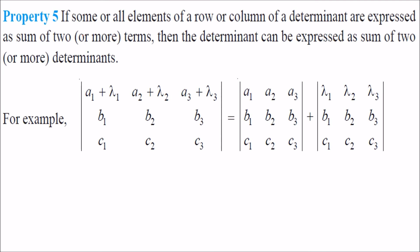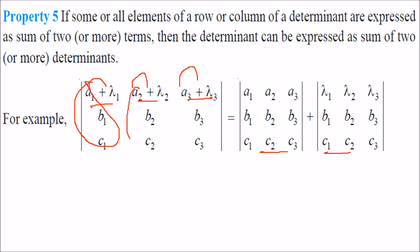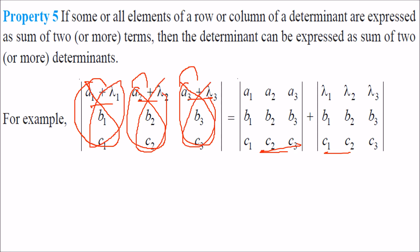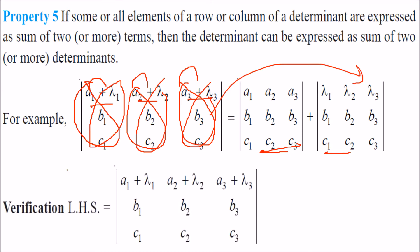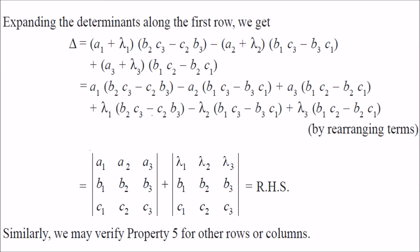Property 5: if all elements of a row or column of a determinant are expressed as the sum of two or more terms — say A1 plus lambda1, A2 plus lambda2, A3 plus lambda3 — then the determinant can be expressed as the sum of two or more determinants. We write it as the addition of two different determinants. When we solve both, we get the same result.